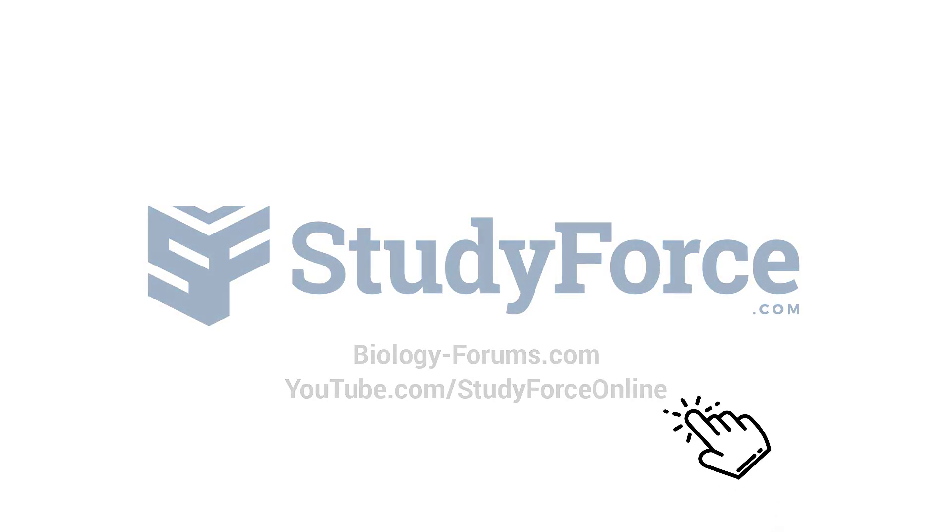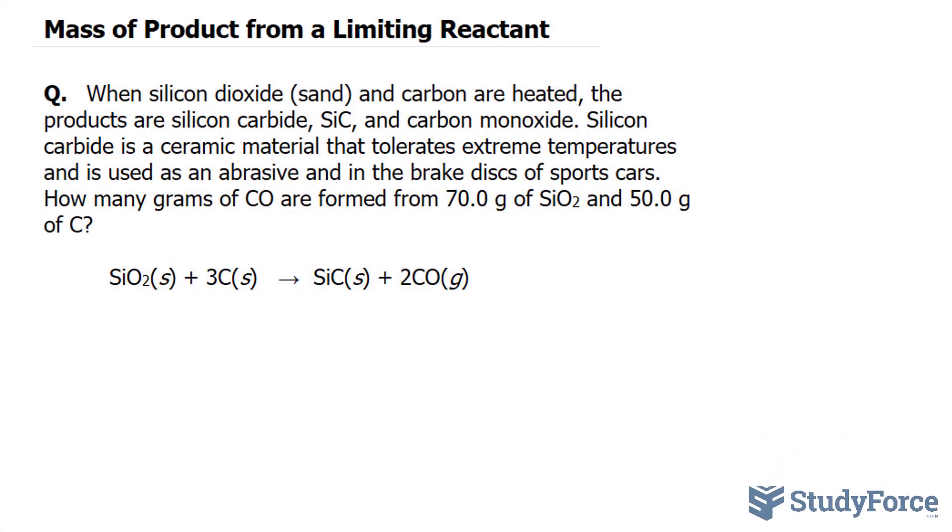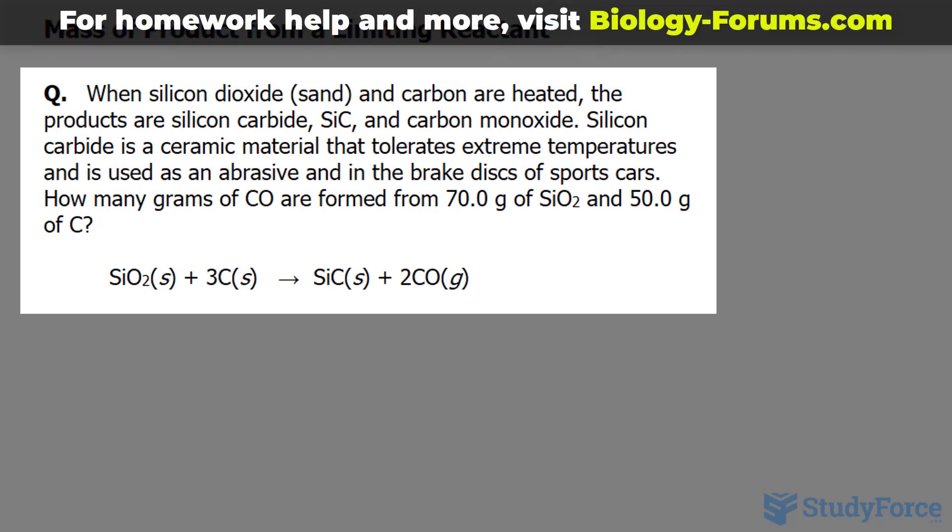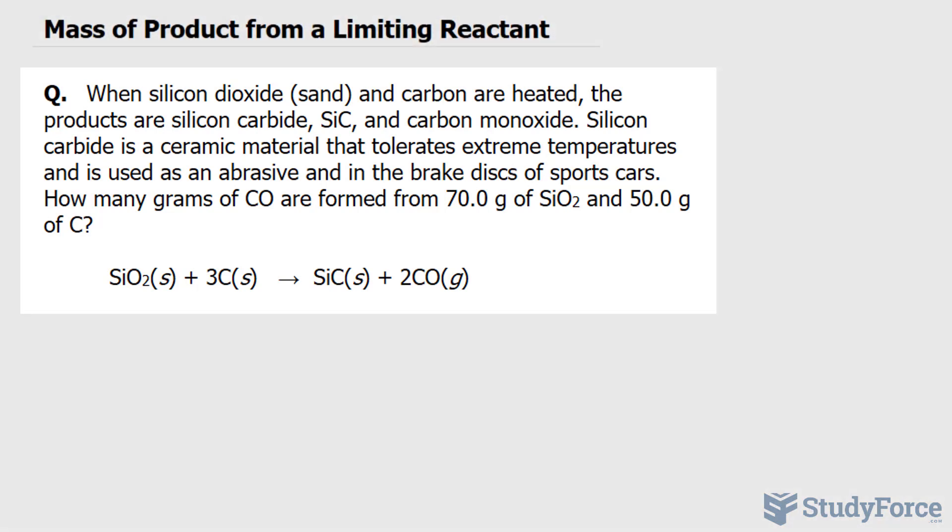In this quick video, I'll show you how to find the mass of a product from a limiting reactant. The question reads: when silicon dioxide, essentially sand, and carbon are heated, the products are silicon carbide and carbon monoxide. Silicon carbide is a ceramic material that tolerates extreme temperatures and is used as an abrasive and in brake discs of sports cars. How many grams of CO are formed from 70 grams of silicon dioxide and 50.0 grams of carbon?